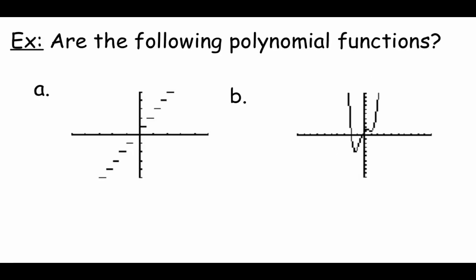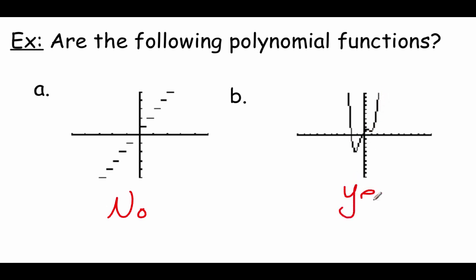Looking at these two graphs, we're going to decide yes or no — do they represent a polynomial function? The first one on the left looks like a greatest integer or step function, made up of a whole bunch of different pieces. We would have to pick up our pencil to draw each individual piece, meaning the graph is not continuous. So no, this one is not a polynomial function. Graph B, however, I could draw without picking up my pencil at all. It has a couple of curves that are smooth and rounded, so yes, this one is a polynomial function.